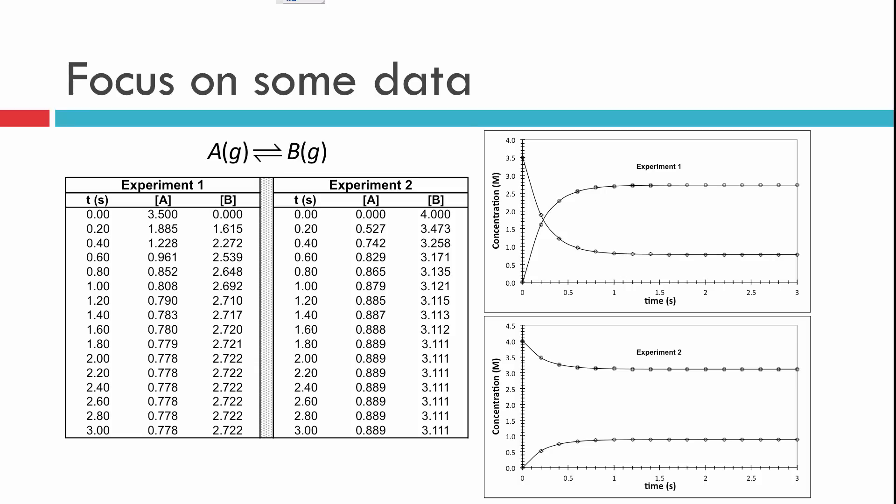So let's start by looking at some data from some random made-up experimental data from this reaction here. Some gas A turns into gas B. We have two experiments, one and two, going on here.